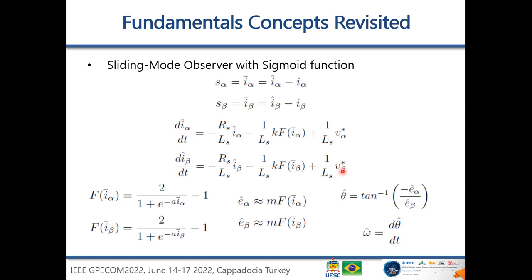Another fundamental concept is the sliding mode observer with sigmoid function. This equation shows the fundamental principle of the observer. Here we have the surface, which is the difference between the estimated current and the actual current. We have the model of the machine modified to include the observer. The function f is the sigmoid function, shown for alpha and beta, with an exponential and a constant. This is quite different from the sign function, where you apply minus one if negative and positive one if positive to the surface.